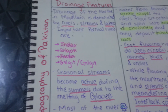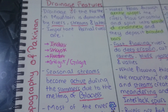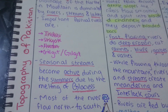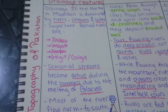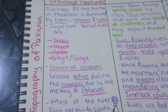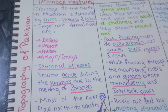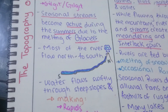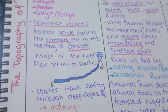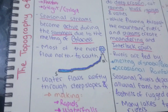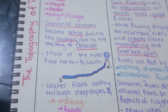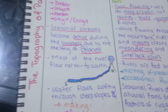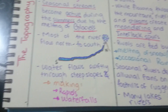The drainage features of the northern mountains are dominated by rivers, streams, and lakes. Important perennial rivers are the Indus, Shyok, Hunza, and Gilgit. Seasonal streams become active during summer due to melting glaciers. Most rivers flow north to south. Water flows swiftly through steep slopes, making rapids and waterfalls.